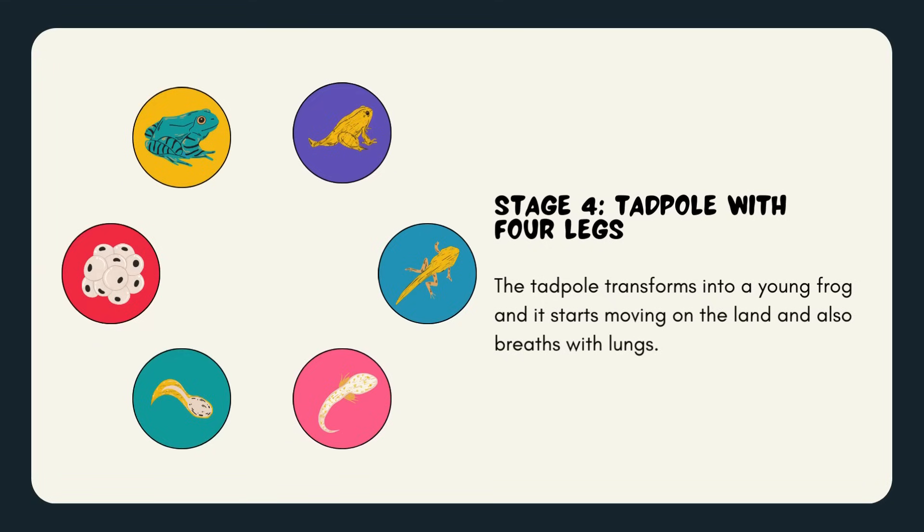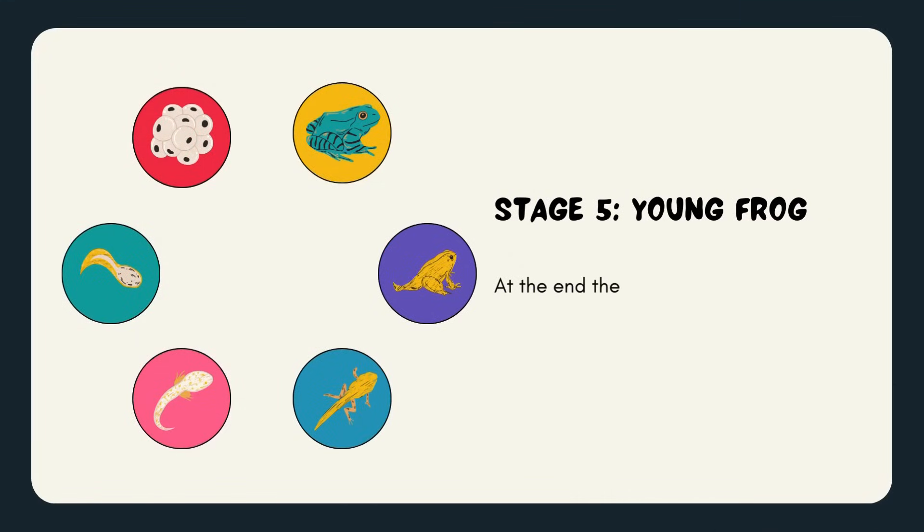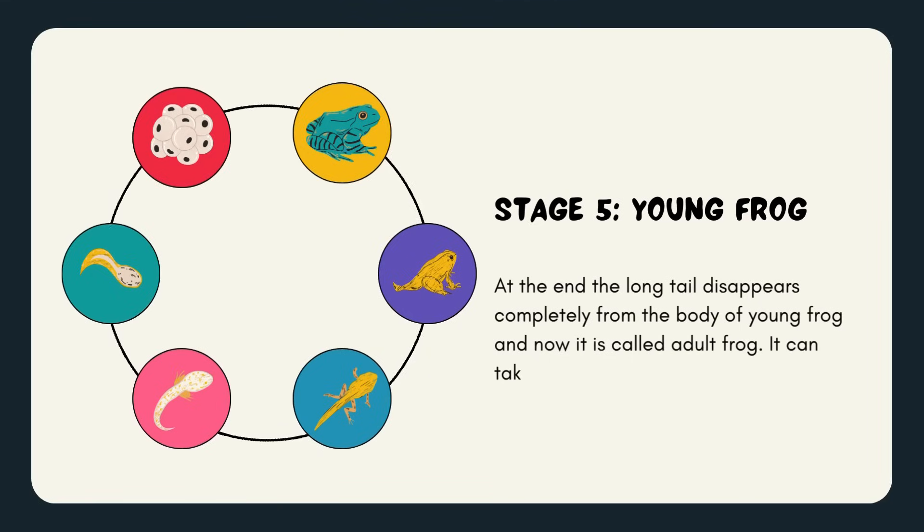Stage 5: Young frog. At the end, the long tail disappears completely from the body of young frog and now it is called adult frog. It can take up to four years before frog becomes fully mature.